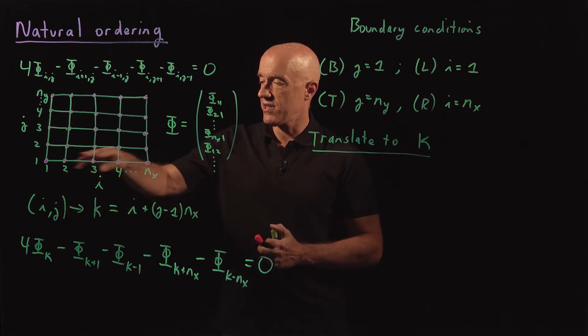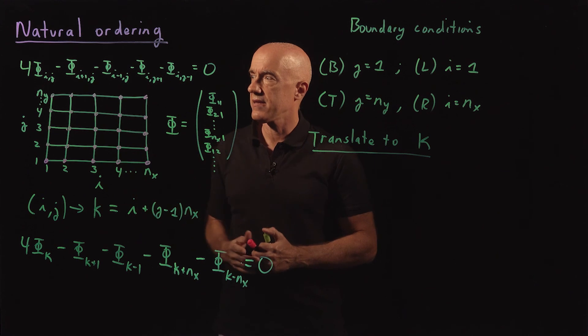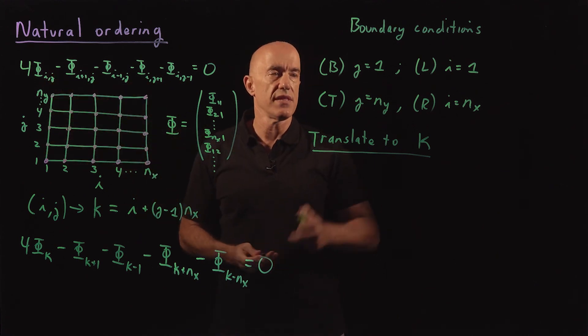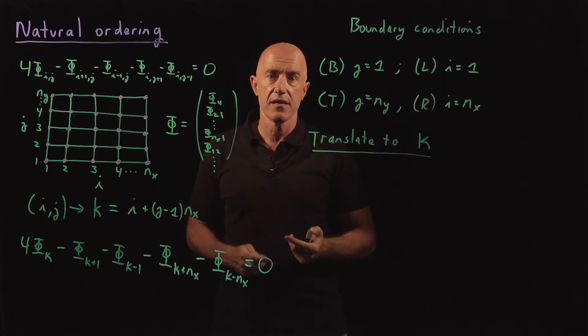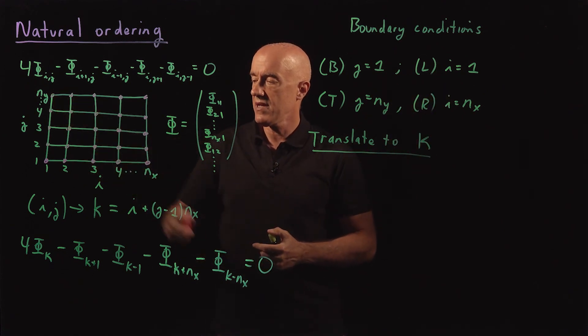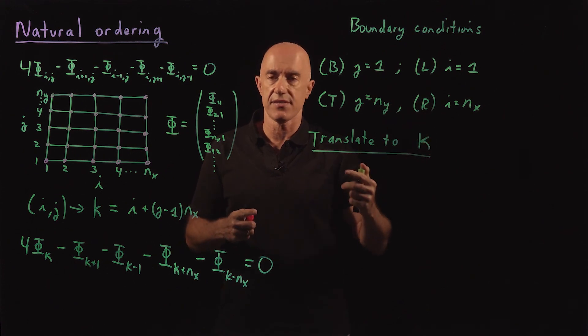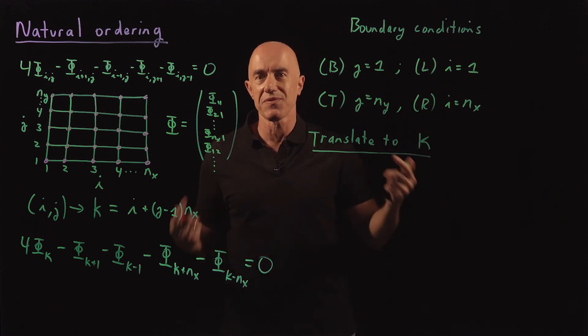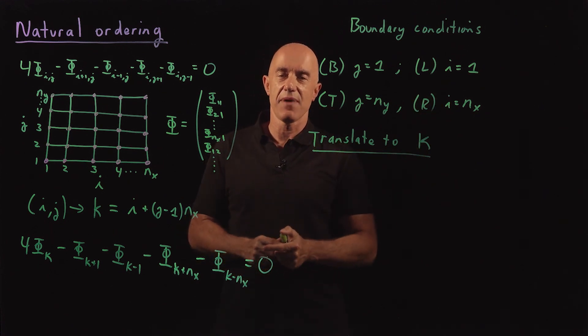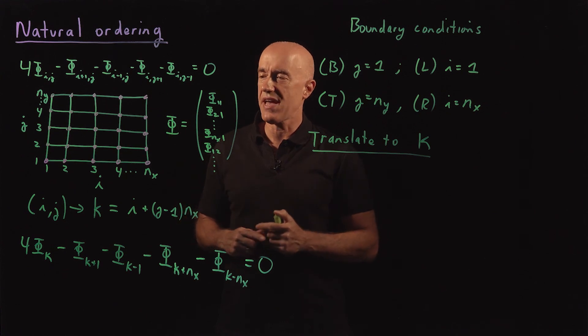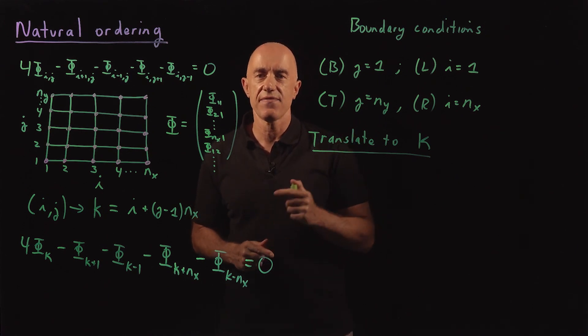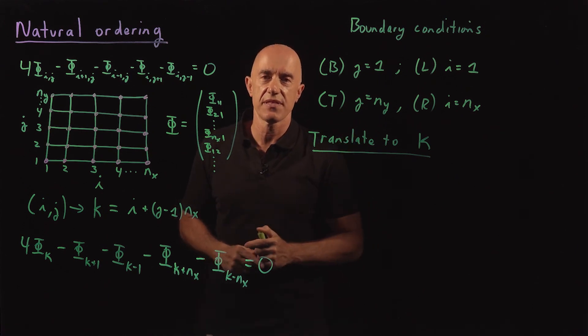This is the conversion here from i, j to k. Now we have to worry about the boundary conditions. These are the boundary conditions in the i, j coordinate system. But in the k coordinate system, you have to do a little jujitsu to rewrite this in terms of k. I have that in my lecture notes. In the next video then, we'll put this all together, and I'll show you what the matrix looks like. I'm Jeff Chasnov. Thanks for watching, and I'll see you in the next video.